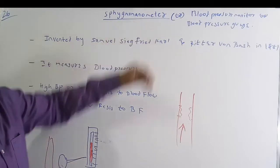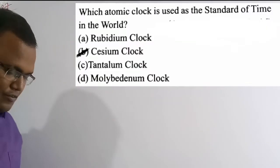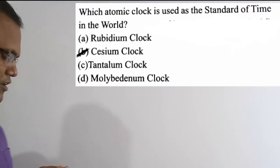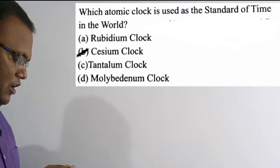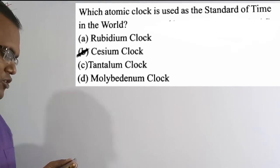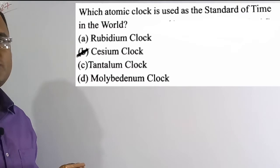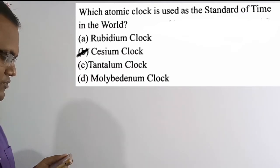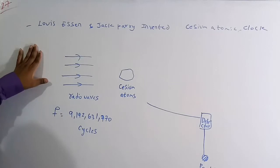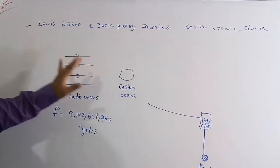Now we are going to solve the 27th question: Which atomic clock is used as the standard of time in the world? Option A rubidium clock, option B cesium clock, option C tantalum clock, option D molybdenum clock. Option B, the cesium clock, is the correct answer. Let's discuss some important facts about it.